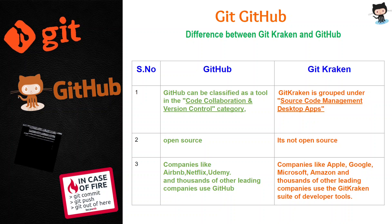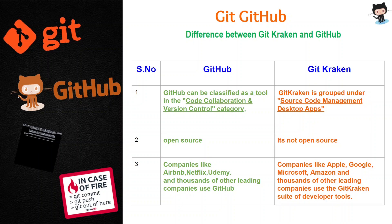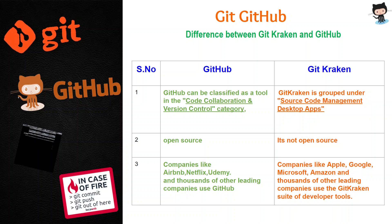GitKraken manages your source code. It shows a pictorial representation of Git pull and Git push commands. It manages the source code and shows the Git commands, issues, and push commands all in pictorial form. That is what GitKraken is.